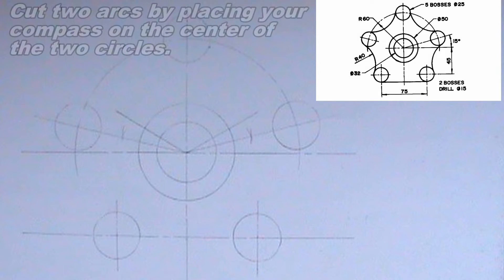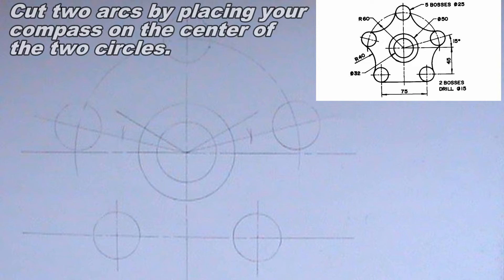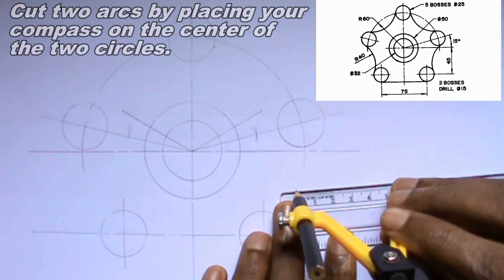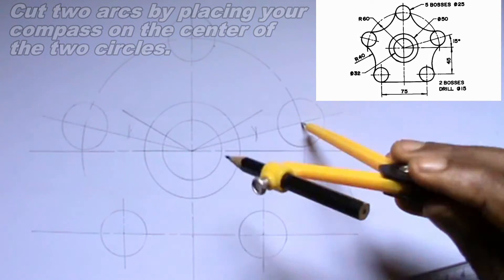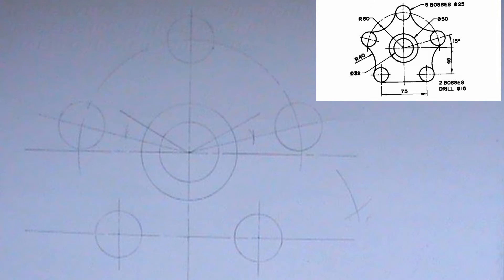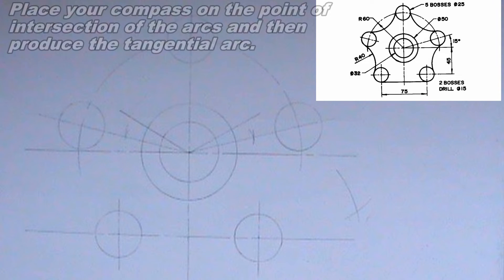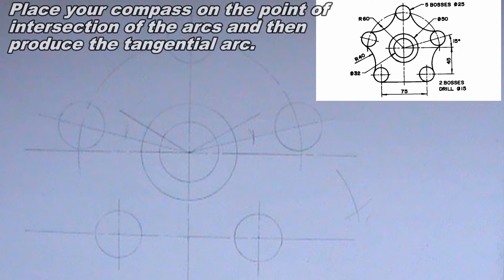Now it is time to produce the tangential arcs. To produce the tangential arc, I will cut two arcs by placing my compass on the center of two circles. The radius of my compass should be the radius of the tangential arc plus the radius of one circle. The arcs should intersect. Now I will place my compass on the point of intersection of the arcs, then I will produce the tangential arc using the radius of the tangential arc.